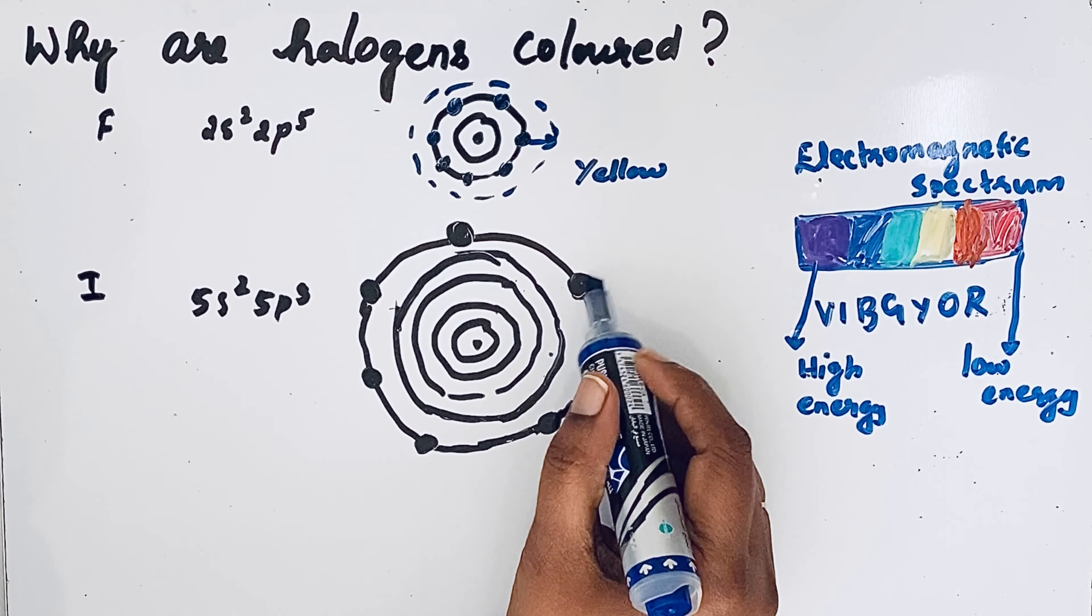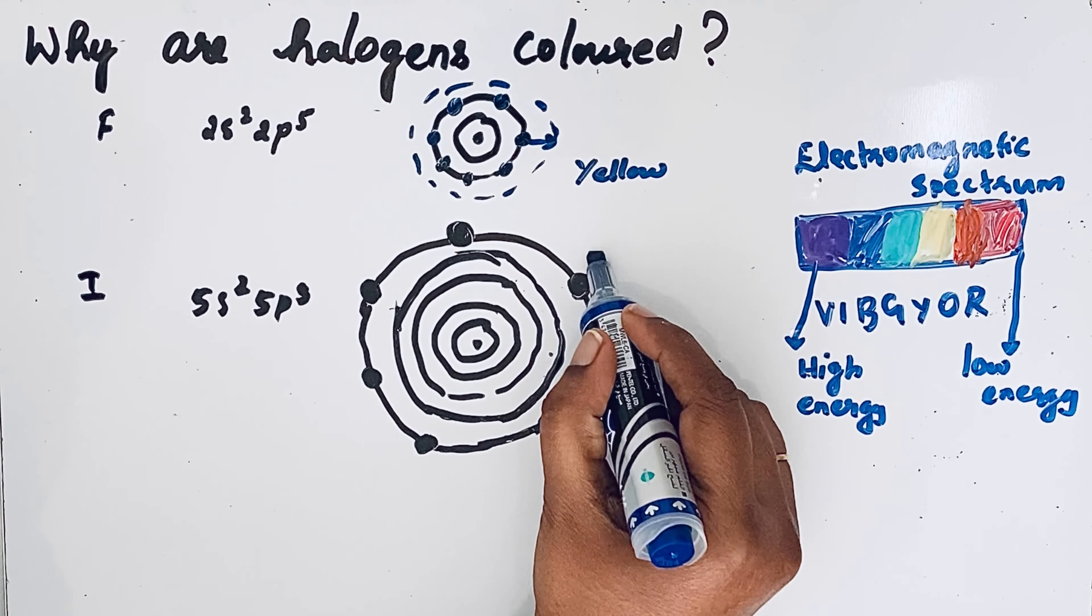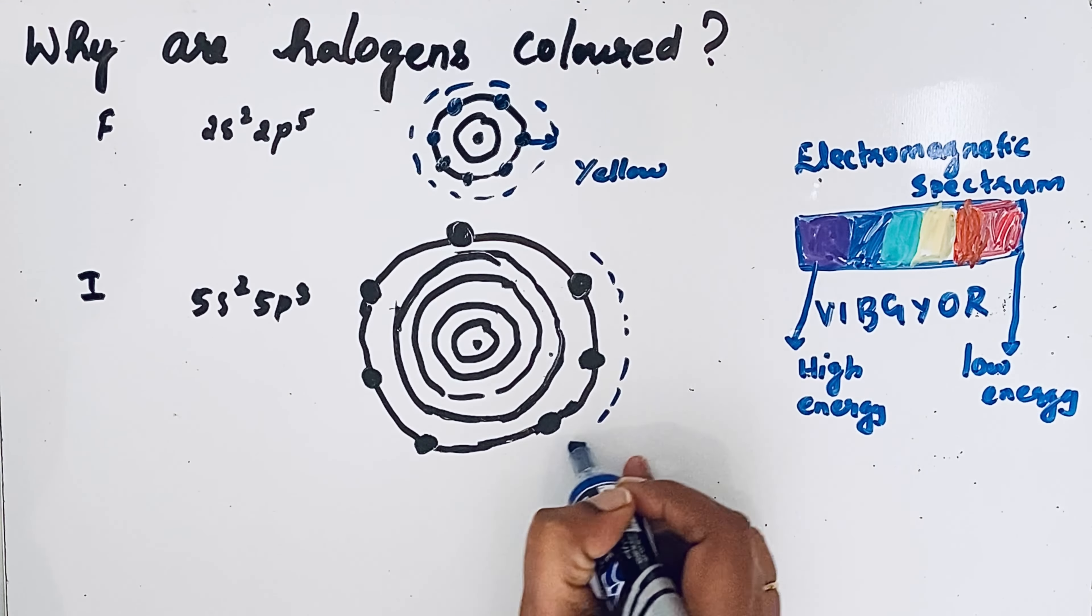When these valence electrons absorb electromagnetic radiations, they will move to the next orbit - the sixth orbit.